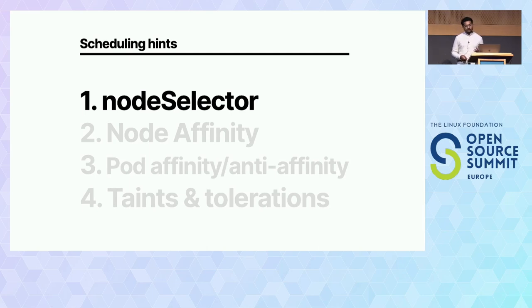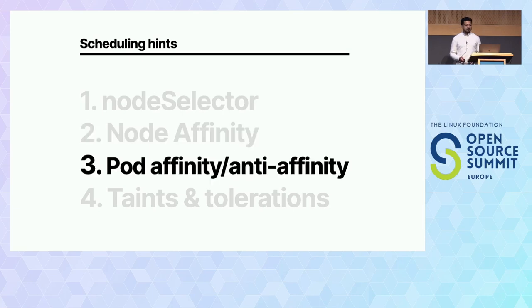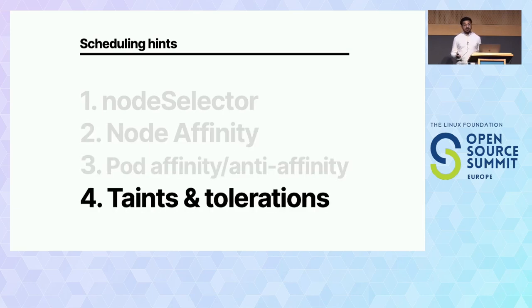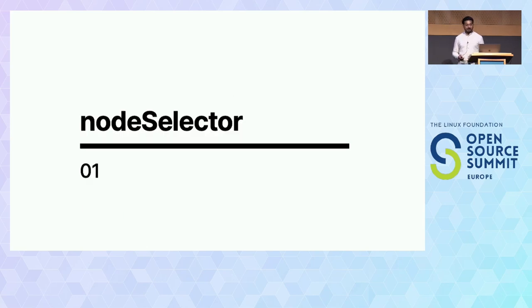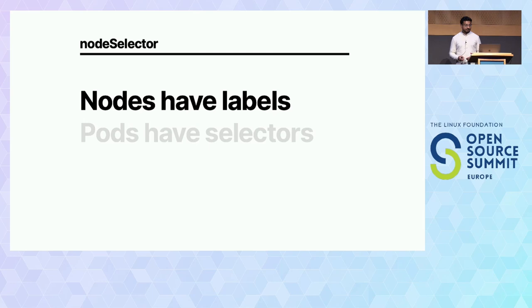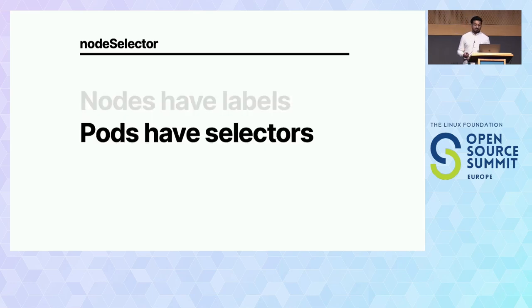Node selector is the simpler strategy to decide which node a pod should be assigned to. The first step is to assign labels to nodes — labels are just key-value pairs. Pods have selectors, the same kind that services use to route to pods. You run a command like kubectl label nodes, the name of the node, and apply a label — in this case, a key-value pair like app=red.